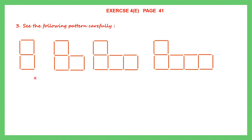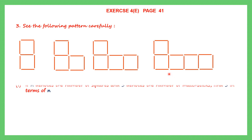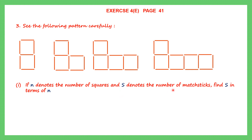Here we have some figures and they are in the form of a pattern. We have to observe this pattern. This is figure 1, figure 2 where there is a change in pattern, then figure 3 and figure 4 — they have formed a particular pattern. The question is: if n denotes the number of squares, that means n is the figure number, and S denotes the number of matchsticks. We have to find S in terms of n.